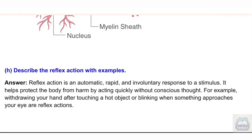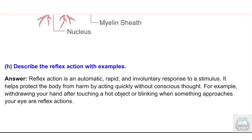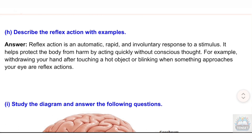(h) Describe reflex action with examples. Answer: Reflex action is an automatic, rapid, and involuntary response to a stimulus. It helps protect the body from harm by acting quickly without conscious thought. Examples include withdrawing your hand after touching a hot object, or blinking when something approaches your eye.